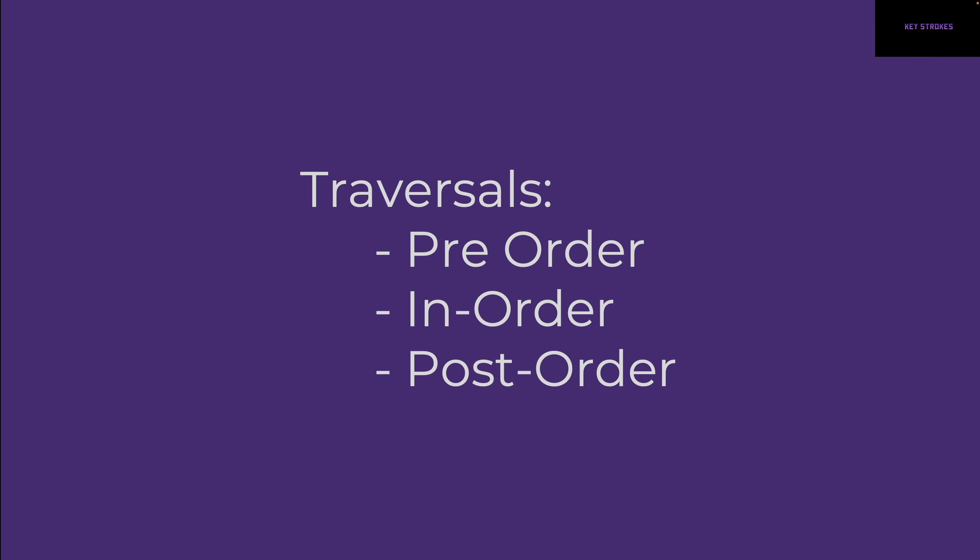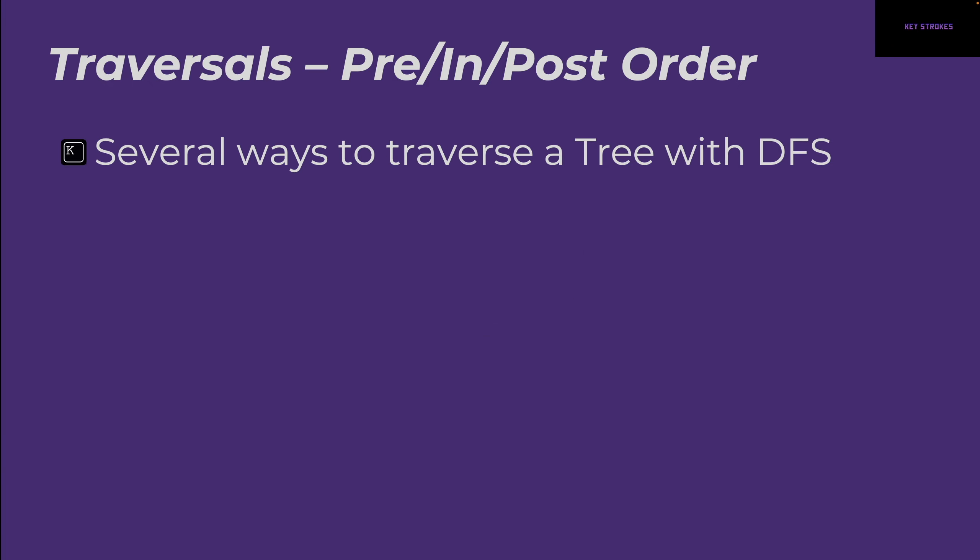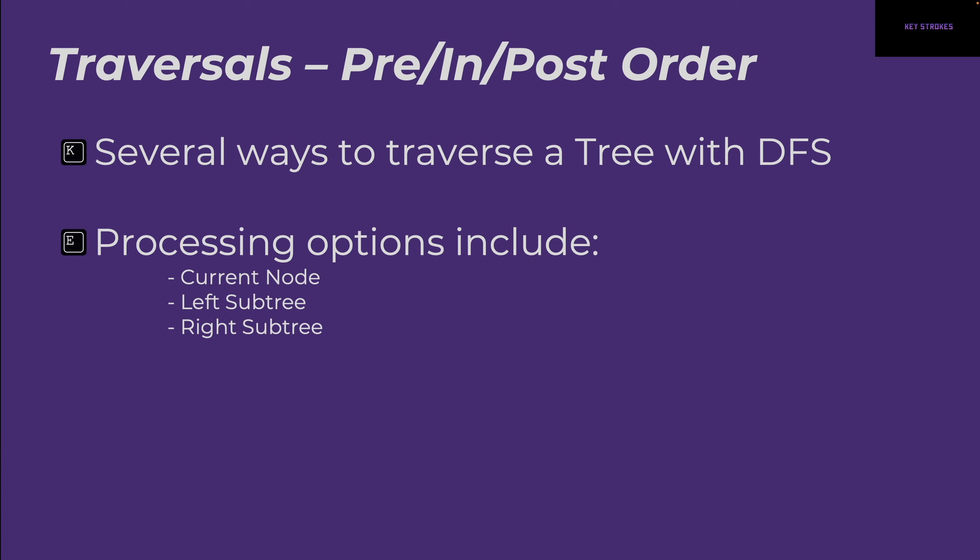Next, let's talk about all the traversals — pre-order, in-order, and post-order. As I mentioned earlier, when you write DFS there are many ways to traverse. When we wrote our program, we saw we were either processing the current node, calling DFS for the left subtree, or calling DFS for the right subtree. You can generate all kinds of permutations, which gives rise to three options for traversing: pre-order, in-order, and post-order traversals.